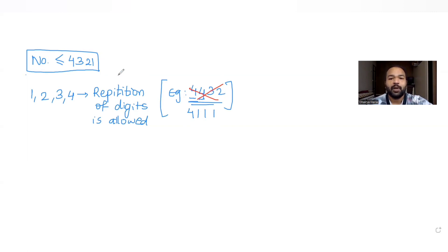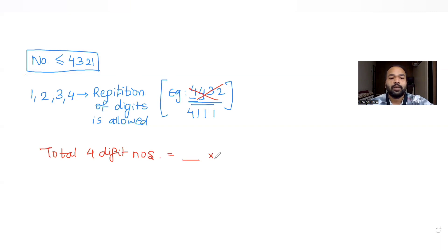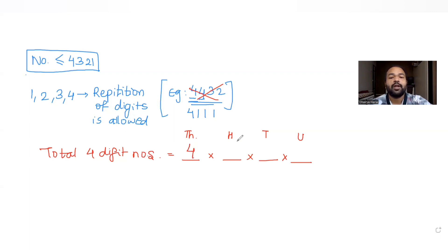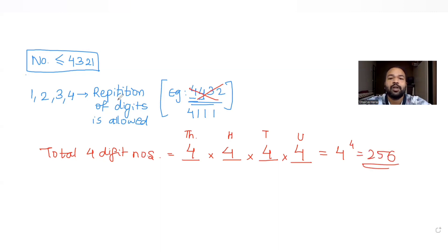Before finding the answer, let's first count how many total four-digit natural numbers can be formed from the digits 1, 2, 3, and 4. In the thousands place I can place any one of the four numbers, and because repetition is allowed, each of the hundreds, tens, and units places also has four options. So the total is 4 raised to 4, which equals 256.